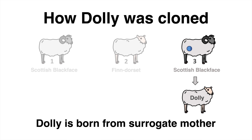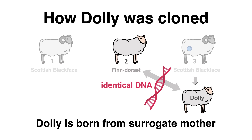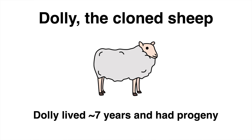Dolly did not have the phenotype of the surrogate mother. Instead, she had the exact same genetic information as Sheep 2 — the sheep that donated the nucleus containing the DNA. By the way, Dolly lived almost 7 years and even gave birth to her own progeny.